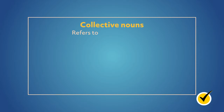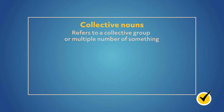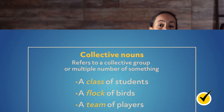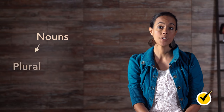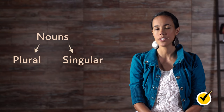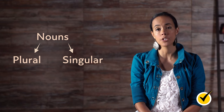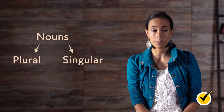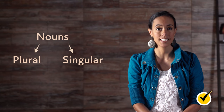Collective nouns are nouns that refer to a collective group or multiple number of something: a class of students, a flock of birds, a team of players, a crowd of fans. Nouns can also come in plural and singular forms. Some nouns describe a single object, person, or idea that stands alone, while others describe multiple objects, people, and ideas.